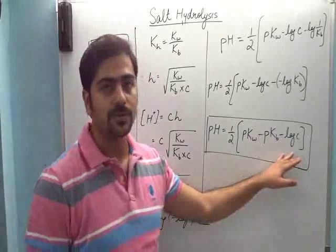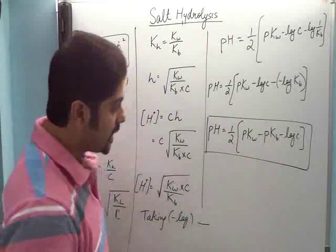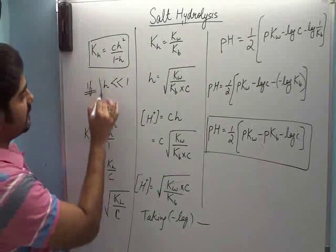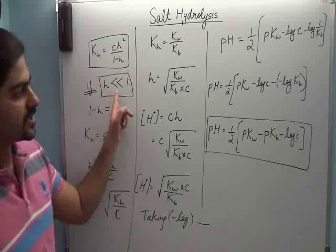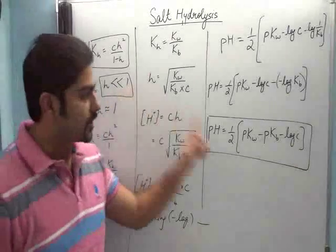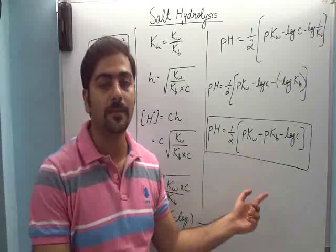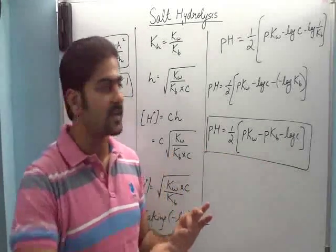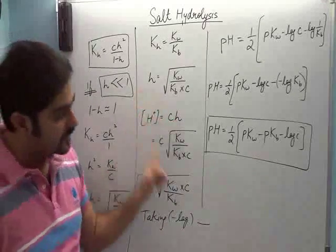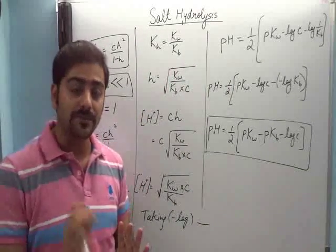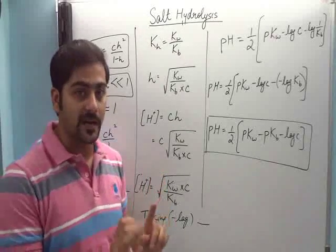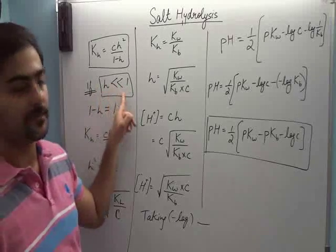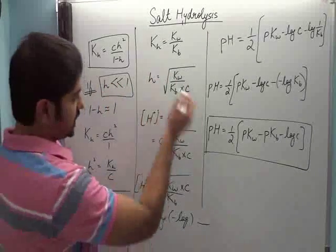Ab isma ek important question hai. Hum is formula pe tab pohunche jab hamne yeh wala approximation liya. Agar yeh approximation valid na hota, to aap formula ko use nahi kar sakti ho. To aapko kya karna padega? Aapko quadratic solve karna padega. Vahan se H ka value aayega, usko C se multiply karke. To sabse pehla equation solve karne se aapko yeh check karna hai, rough mein check karna hai ki H ka value 1 se kaafi chota hai ya nahi.